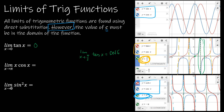For the limit as x approaches 0 of tangent, we get 0 because tangent of 0 is 0. For the limit as x approaches pi of x times cosine of x: x has a limit of pi, and cosine of pi is negative 1, so the answer is pi times negative 1, which is negative pi. For the limit as x approaches 0 of sine squared x — which is the same as the limit of sine x quantity squared — sine of 0 is 0, and 0 squared is 0.